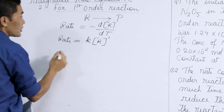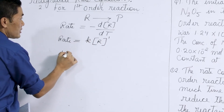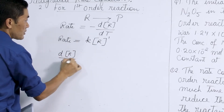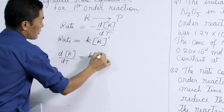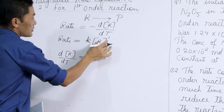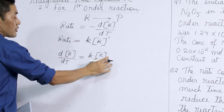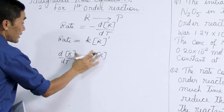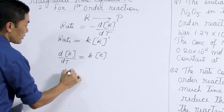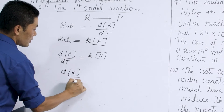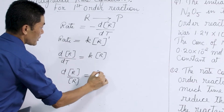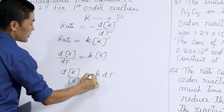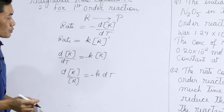So from these two equations we get: the change in concentration of the reactant dr by change in time dt is equal to k·R. On rearranging this we get dr/R equal to minus k·dt.